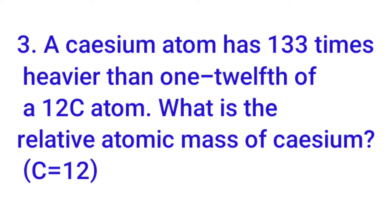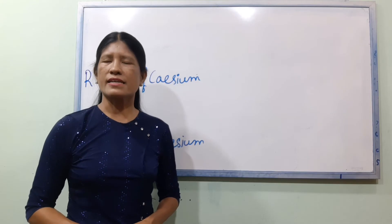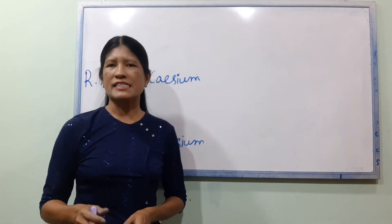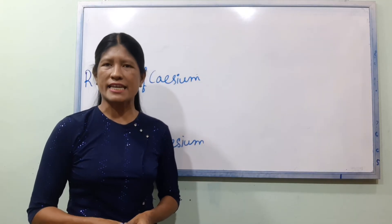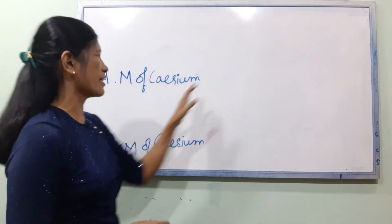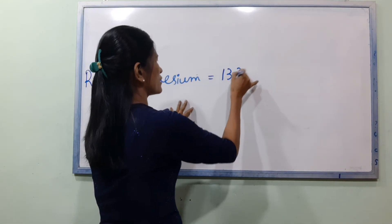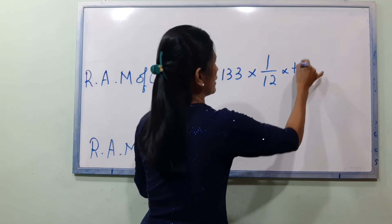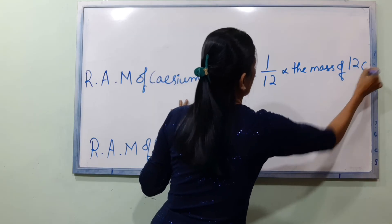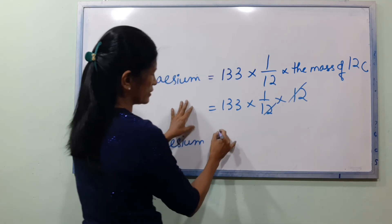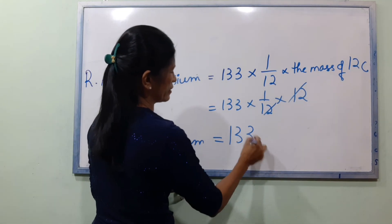Exercise 3: A CCN atom is 133 times heavier than 1/12 of a carbon-12 atom. What is the relative atomic mass of CCN? The relative atomic mass of CCN is equal to 133 times one-twelfth of the mass of one atom of carbon-12. The relative atomic mass of CCN is equal to 133.